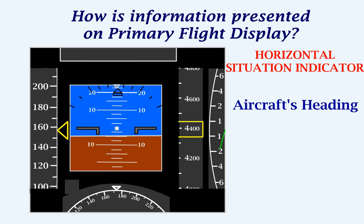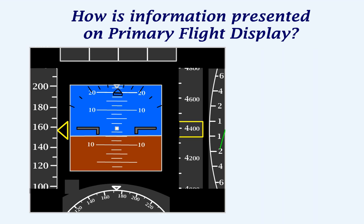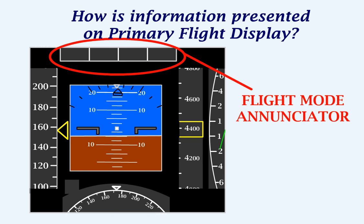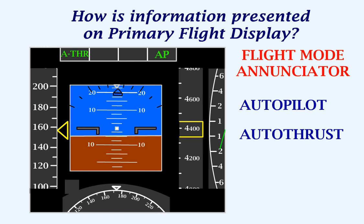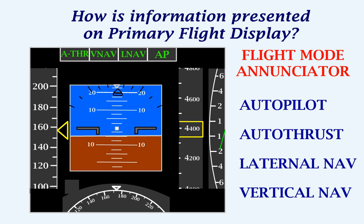At the top of the PFD we have the flight mode annunciator, or the FMA. The FMA gives several pieces of information to the pilots, such as the status of the autopilot, status of the auto thrust engagement mode, the mode of lateral navigation, and the engagement mode of vertical navigation.